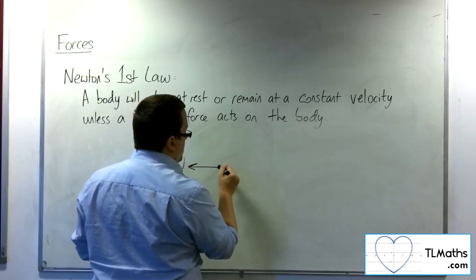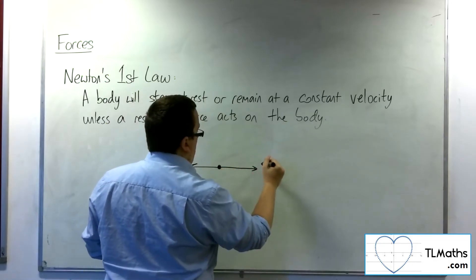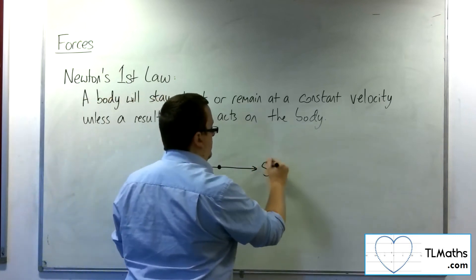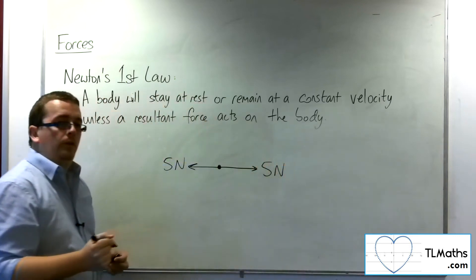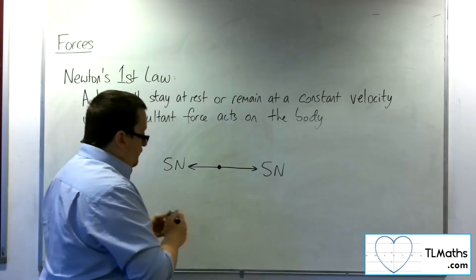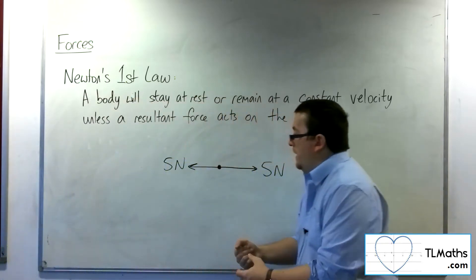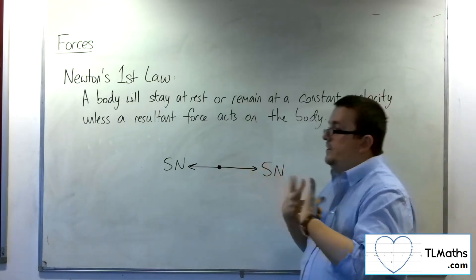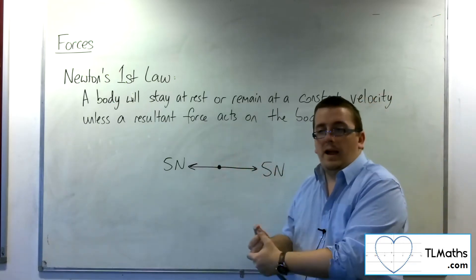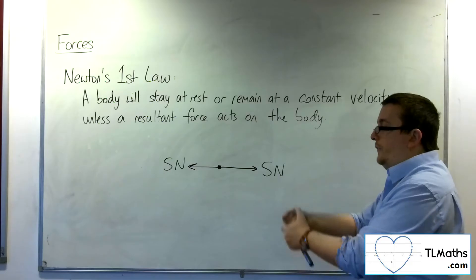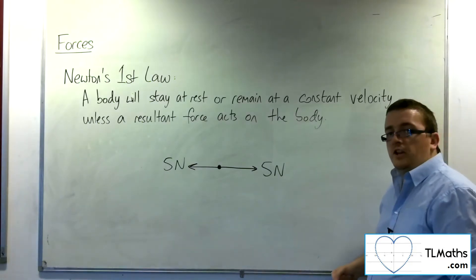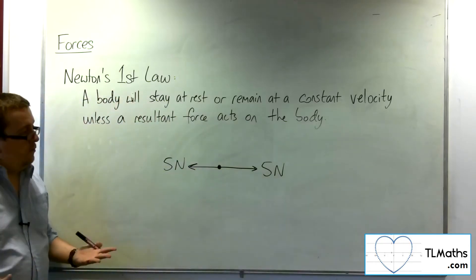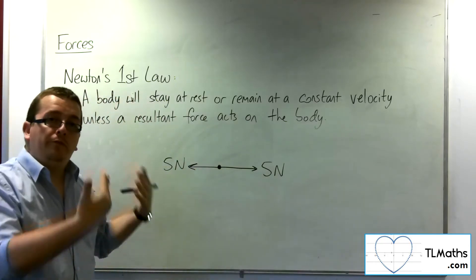But if I was pulling the particle along with a force of 5 newtons, then what you would have is that I'm trying to pull the particle along at 5 newtons, but this wind is pulling it back, pushing it back, and so the particle will remain stationary. So the resultant vector here, or the resultant force, would be 0. So there would be 0 resultant force.